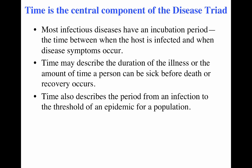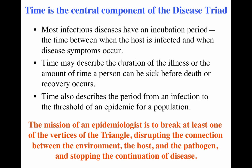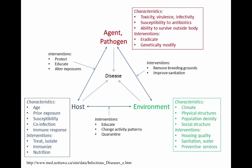The mission of an epidemiologist or public health community is to break one of these vertices of the disease triad. If you remove the pathogen, you don't have disease. If you ameliorate the environment, you may reduce disease. If you strengthen the host through vaccination, you can prevent disease. Breaking any one of those vertices disrupts the relationship between environment, host, and pathogen and stops the continuation of disease.